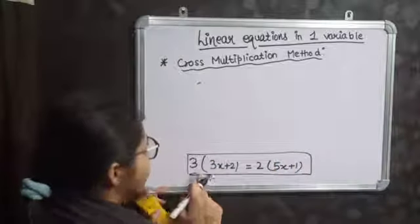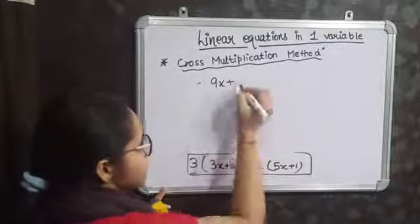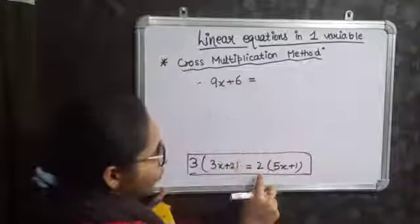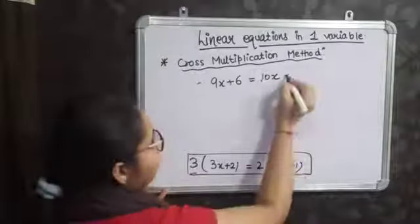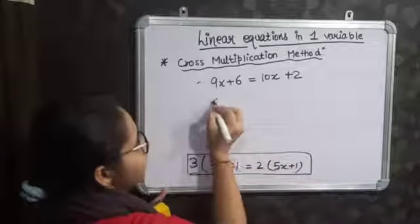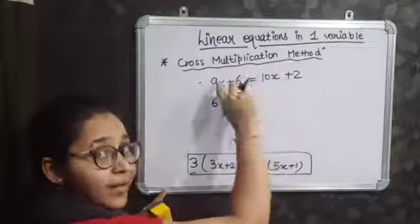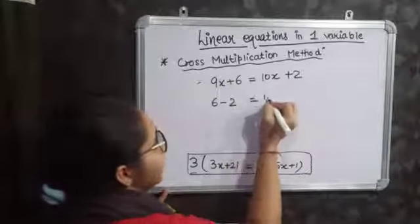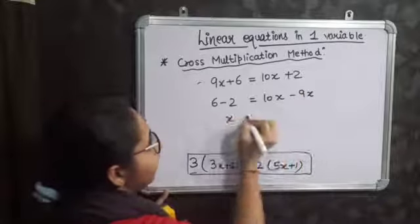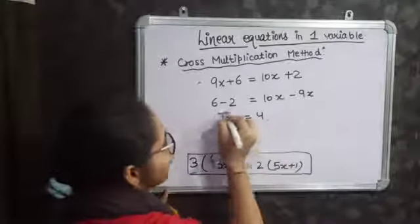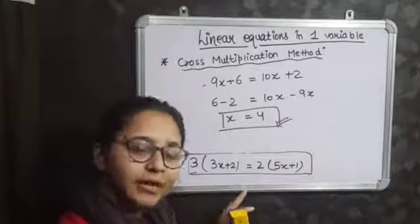Now you can solve this equation with the rule of transposing. 3 times 3x plus 2 gives 9x plus 6, which equals 2 times 5x plus 1, giving 10x plus 2. Then 6 minus 2 gives 4, and 10x minus 9x gives x. Finally, x is equal to 4. This is the cross multiplication method.